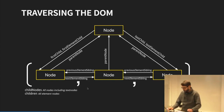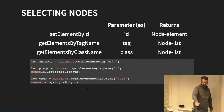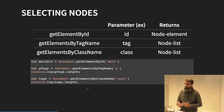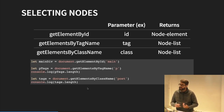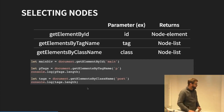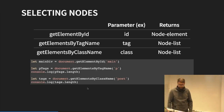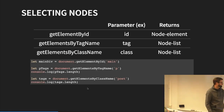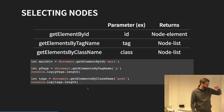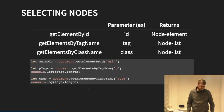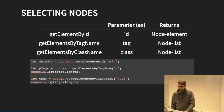If we want to select a specific node on the page, we can draw a parallel to CSS. When you write CSS you need to select something to change that element. We have three methods: getElementById, getElementsByTagName, and getElementsByClassName. Those three methods can be used to extract specific elements or get a reference to a specific element inside the DOM.